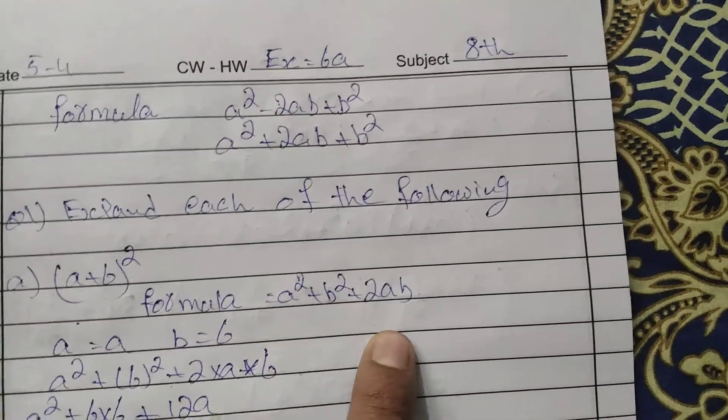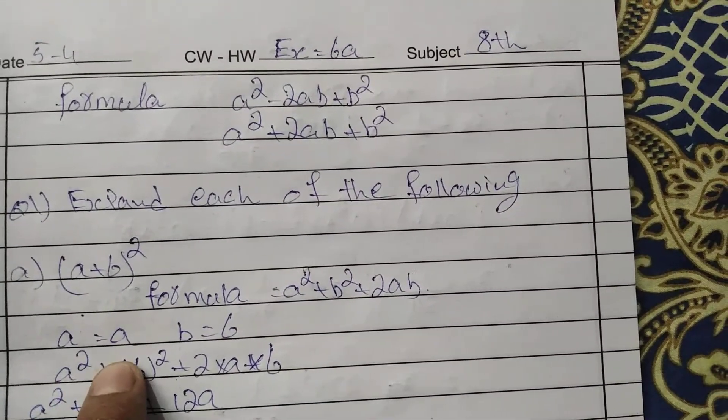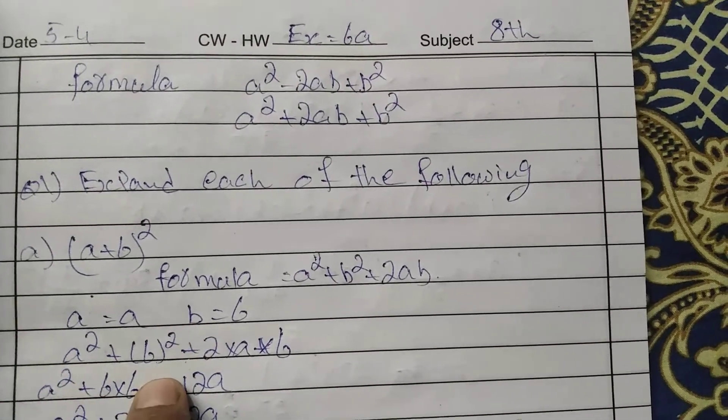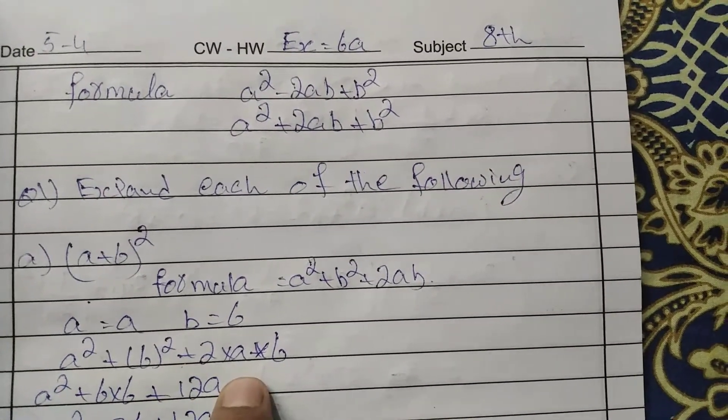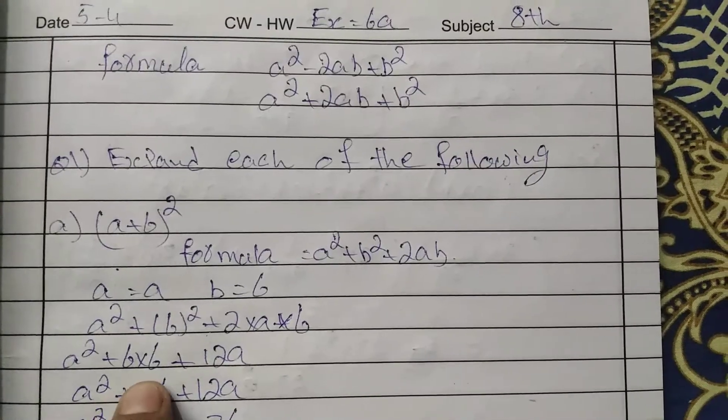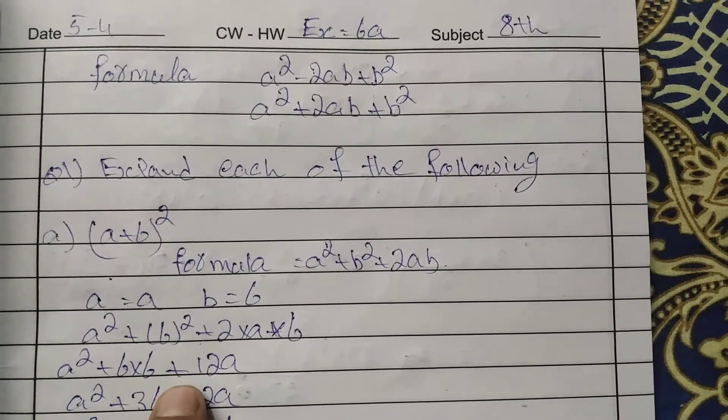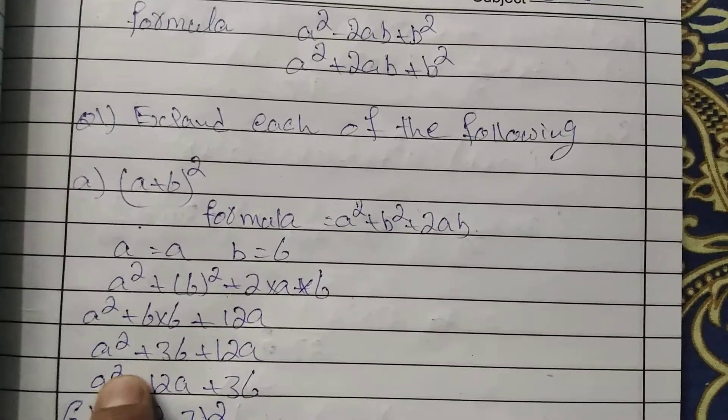Here a equals a and b equals 6. So a² + 6² + 2ab. That's a² plus 6 multiplied by 6 plus 2 times 6a, which is 12a. a² as it is, 6 squared is 36.